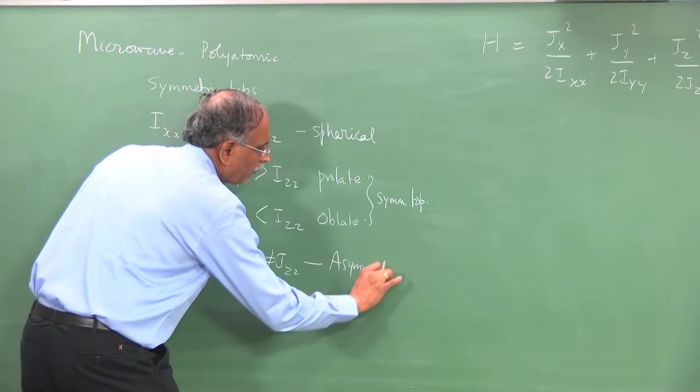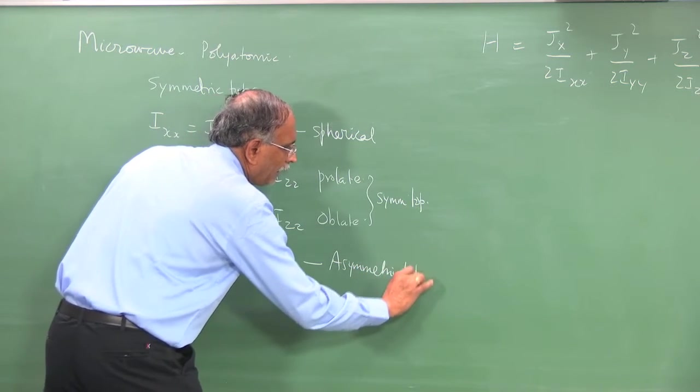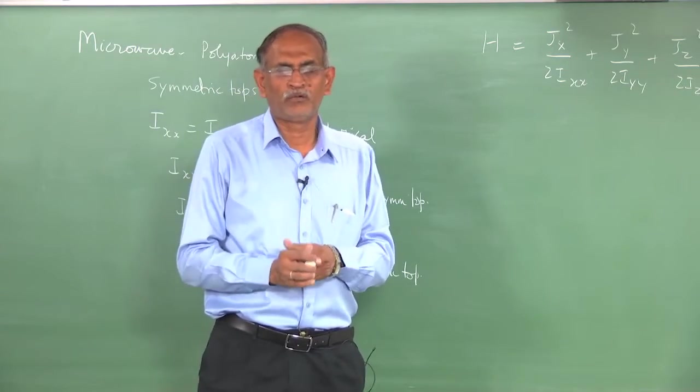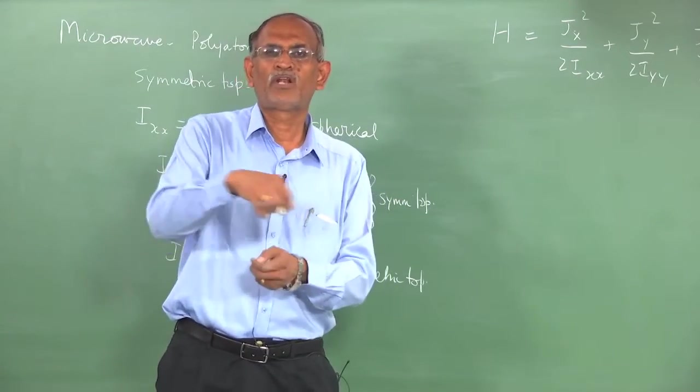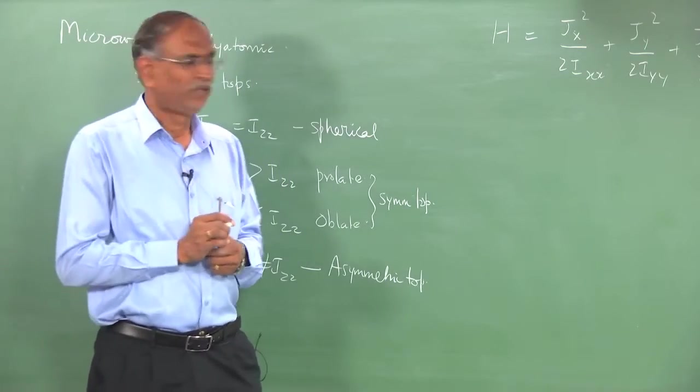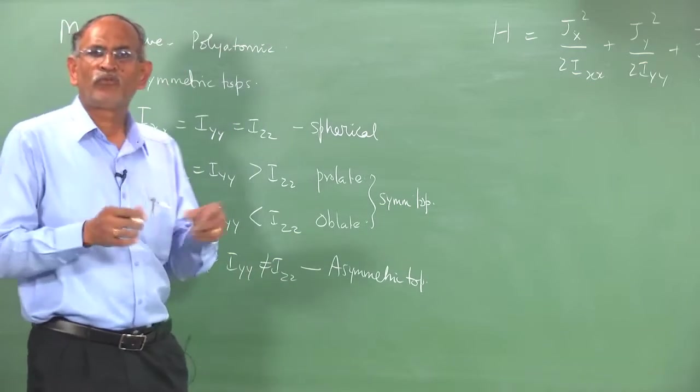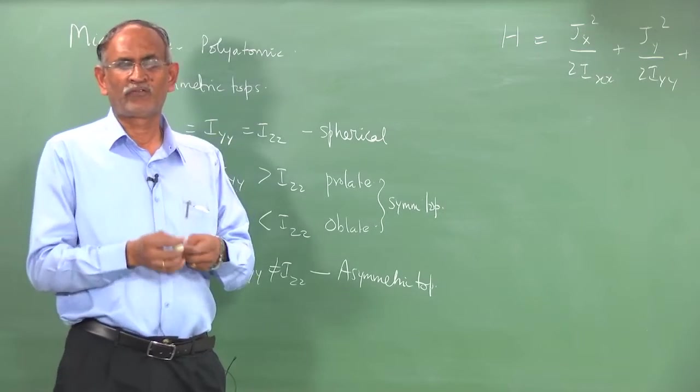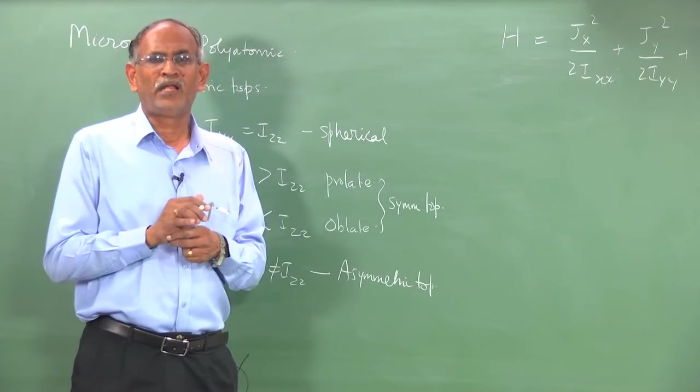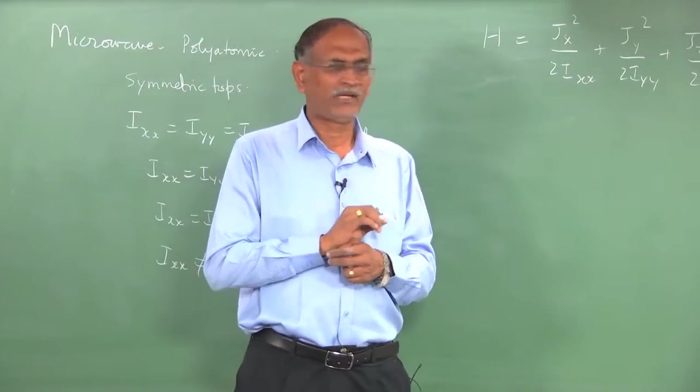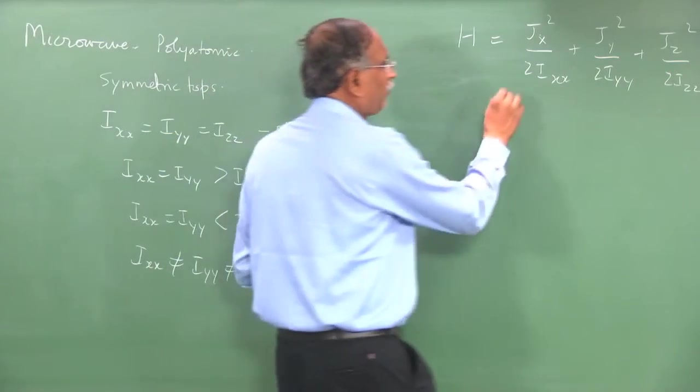Some examples were given in the lecture. You are supposed to look at the structure of the molecule and any molecule which has a threefold axis of symmetry will most likely be a symmetric top. And molecules which do not have a threefold axis of symmetry which have only twofold axis of symmetry are by nature asymmetric tops. So,